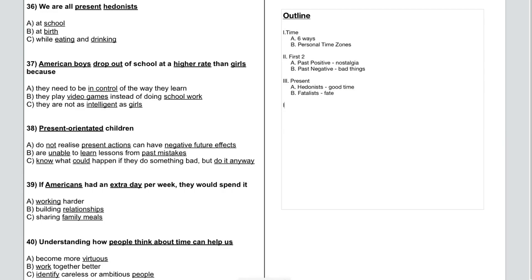Looking at the future time zone, people classified as future active are the planners and go-getters. They work rather than play and resist temptation. Decisions are made based on potential consequences, not on the experience itself. A second future-orientated perspective, future fatalistic, is driven by the certainty of life after death and some kind of a judgment day when they will be assessed on how virtuously they have lived and what success they have had in their lives.